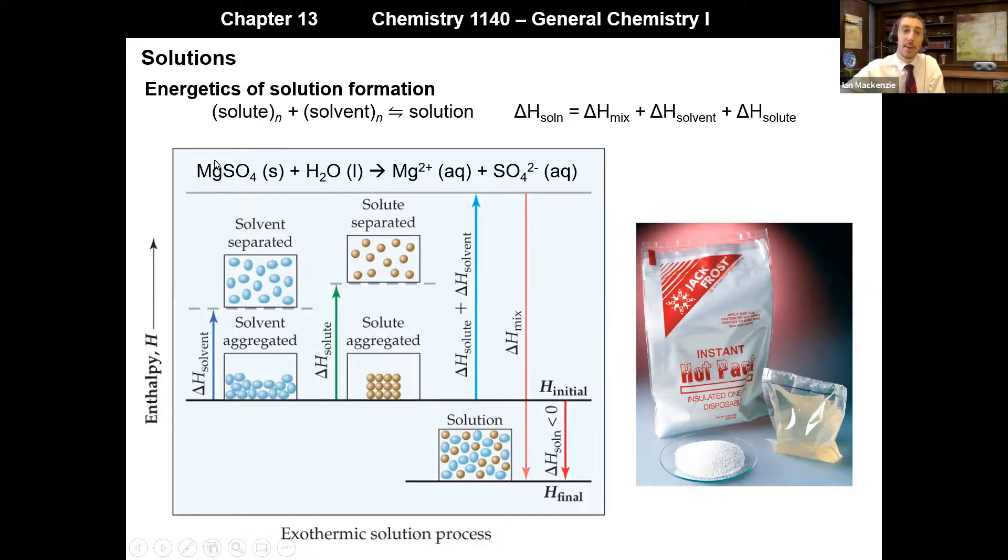When you take that and break that inner solid package to get the solid to mix with the water, we're disrupting the magnesium sulfate solid. So that would be our delta H solute. We're disrupting some water interactions. That's delta H solvent. But when we go to form the solvated ions, the enthalpy of mixing is much more negative. And so as a result, we give off actually negative 91.2 kilojoules per mole of magnesium sulfate. So this is quite exothermic. And the hot pack gets quite hot, and we can use that on sore muscles or any other purpose.